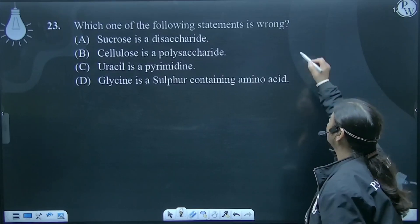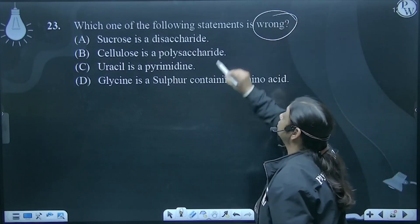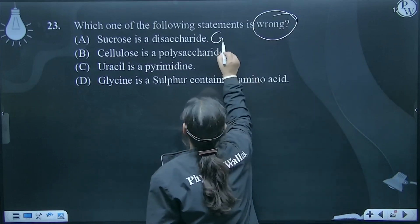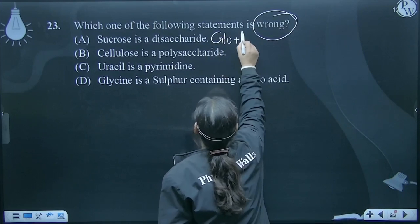Which of the following statement is wrong? Sucrose is a disaccharide? Yes, it is made up of glucose and fructose. No doubt.